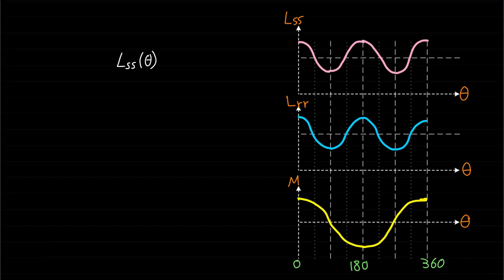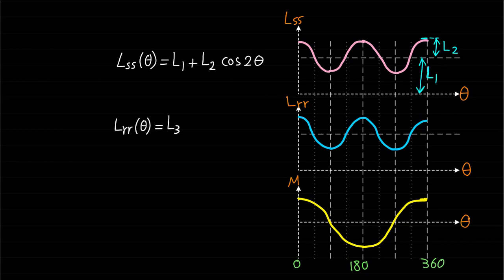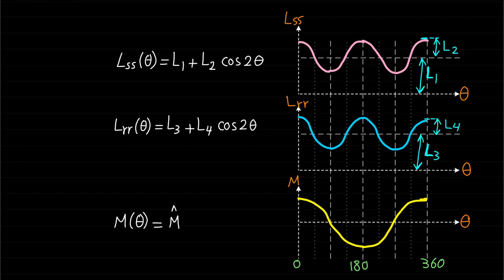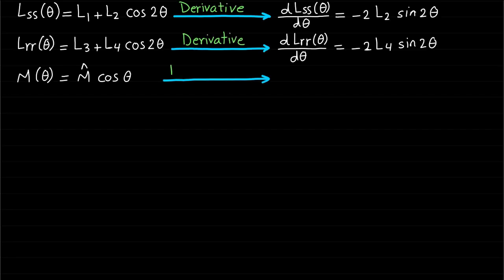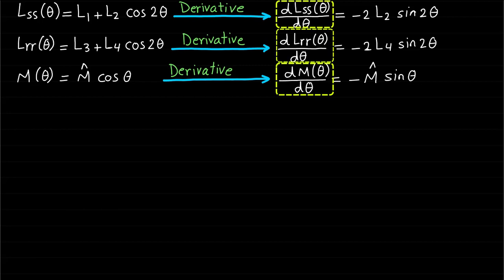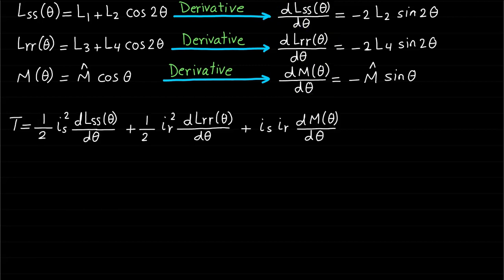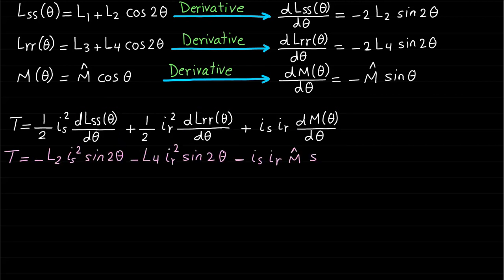LSS of theta equals L1 plus L2 cosine 2-theta. LRR of theta equals L3 plus L4 cosine 2-theta. M of theta equals M-hat cosine theta. The derivative of these inductances with respect to rotor position can be identified, and by substituting these derivatives into the torque expression, the total torque expression of the system can be represented as shown.